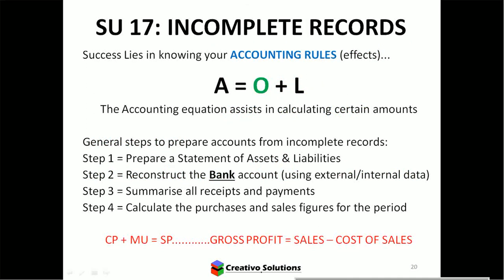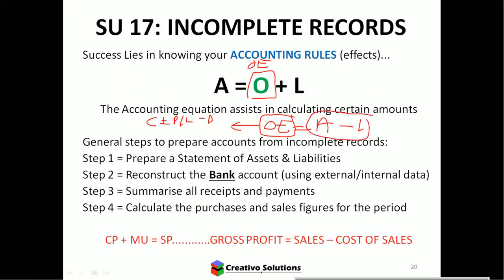There's the accounting equation: A equals OE plus L. Remember OE is owner's equity. You can make owner's equity the subject of the equation — OE equals A minus L. That's useful to work out equity, and we know equity equals capital plus or minus profit or loss minus drawings. These two equations are equal.